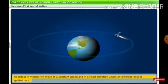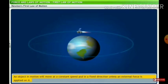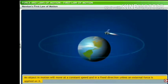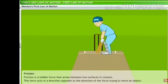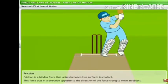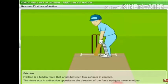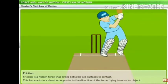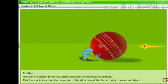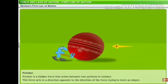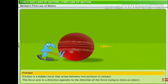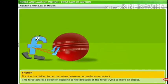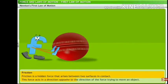Certain experiences we come across while traveling in a motor car also illustrate this. Friction force is a hidden force that arises between two surfaces in contact with each other — for example, between the surface of a ball and the ground. It acts in a direction opposite to the direction of the force trying to move the object.